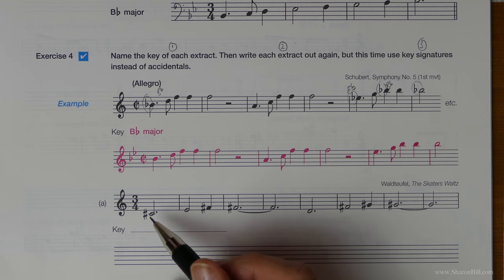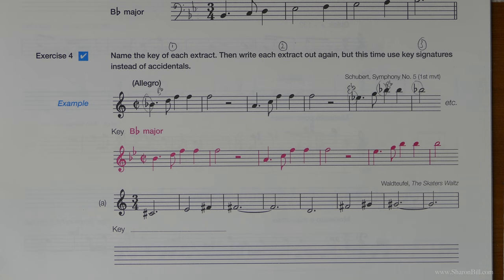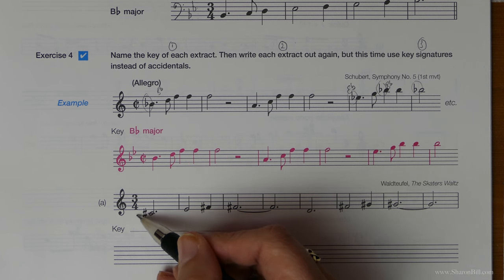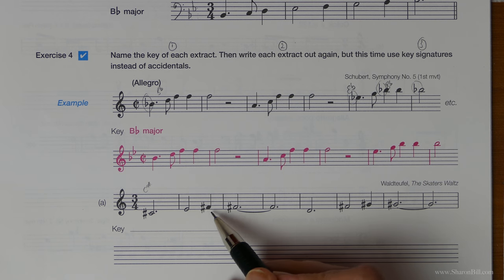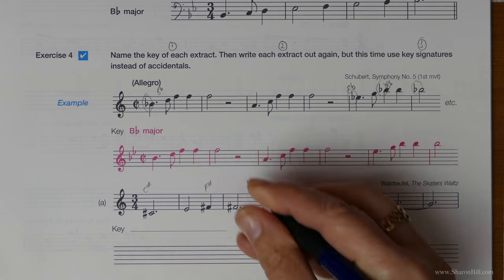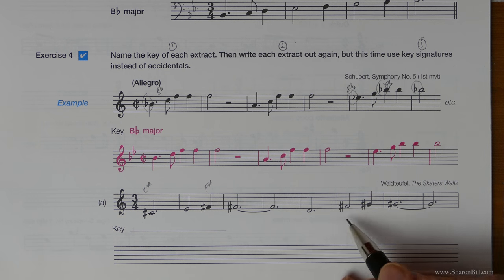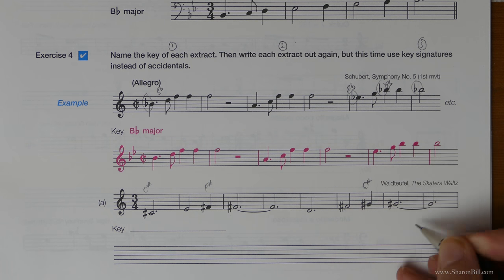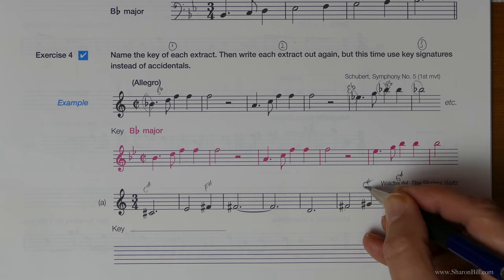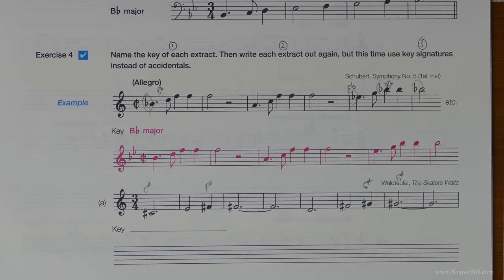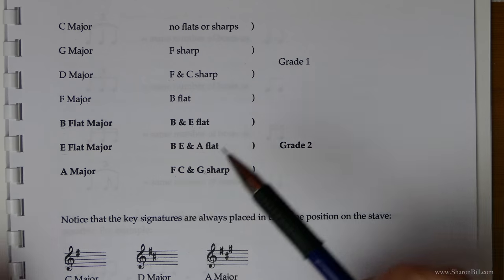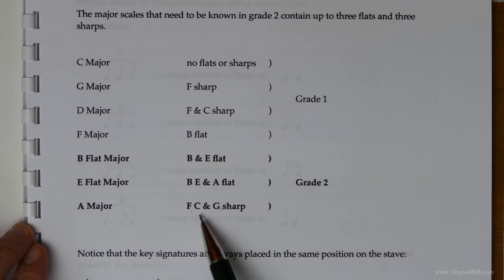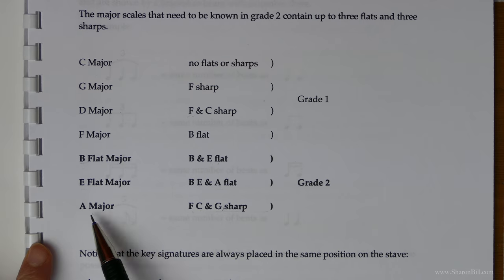Let's look at example A. First, let's look for clues: that's a C sharp, that's an F sharp, another F sharp, another F sharp, and a G sharp, another G sharp. So we've got F, C, G sharp. Refer to your information sheet - F, C, G sharp is A major. So first part of the question is complete: we're in A major.